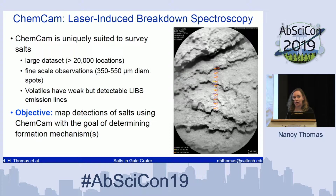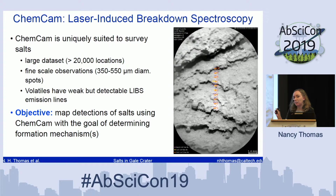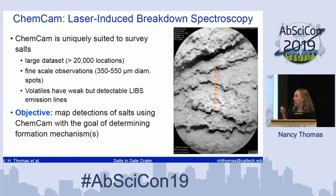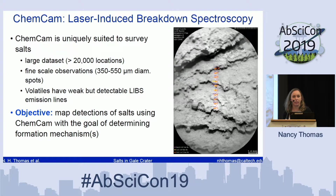ChemCam is very valuable for studying salts because it provides a very large dataset. Every day, Curiosity measures a few rocks with ChemCam, totaling over 20,000 individual locations measured on the surface to date. It provides very fine-scale elemental geochemistry measurements — each individual LIBS spot is only 350 to 550 microns in diameter. Volatile elements, which allow us to measure and quantify salts, have weak but detectable emission lines with ChemCam.